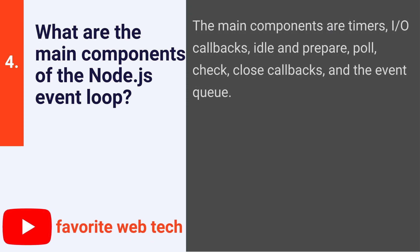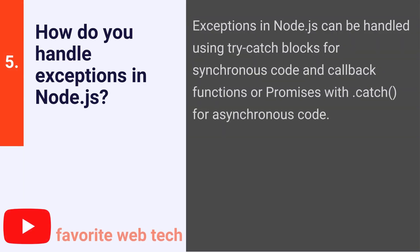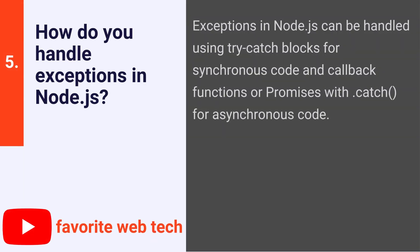What are the main components of the Node.js event loop? The main components are timers, I/O callbacks, idle and prepare, poll, check, close callbacks, and the event queue.